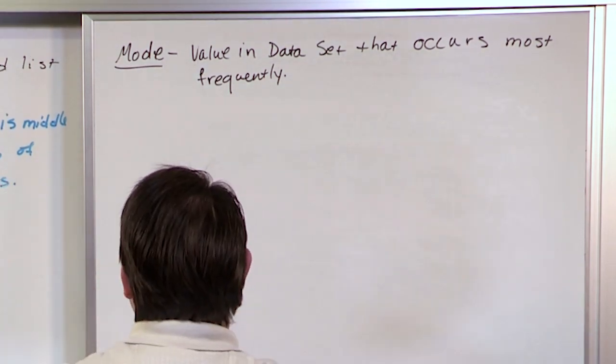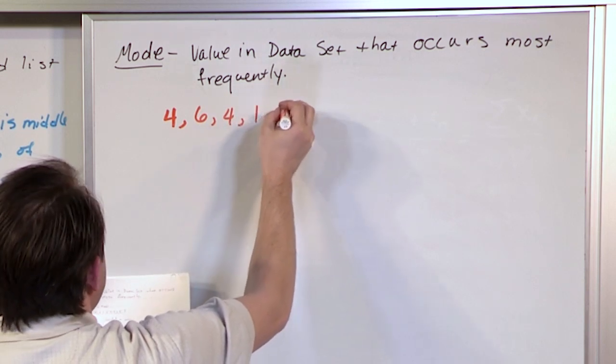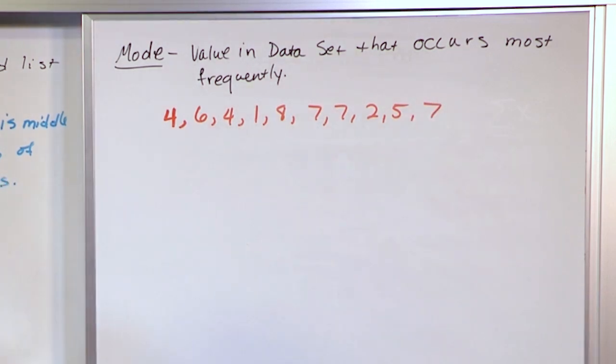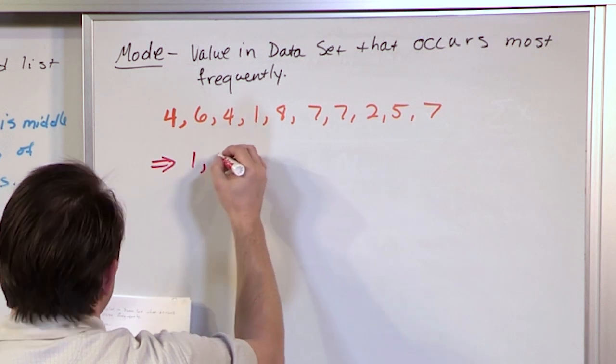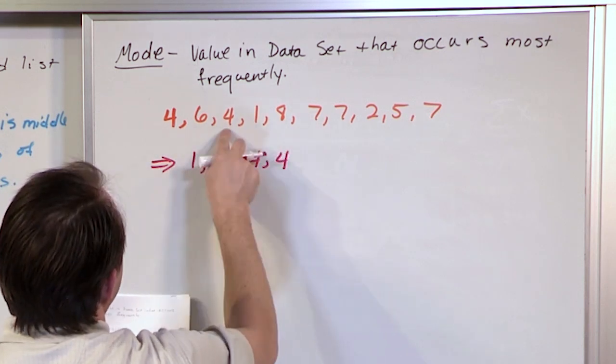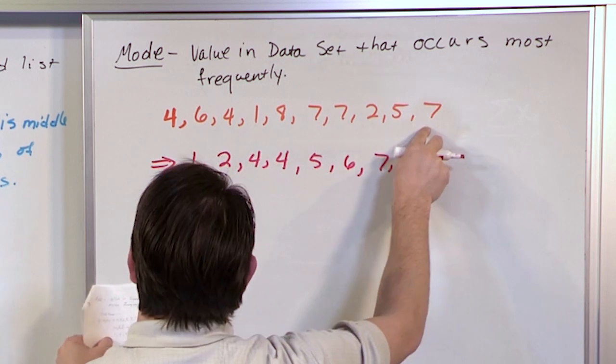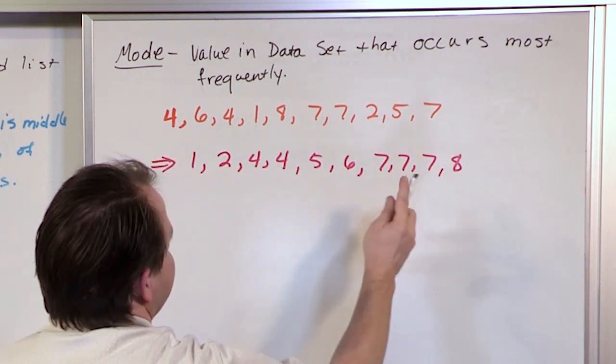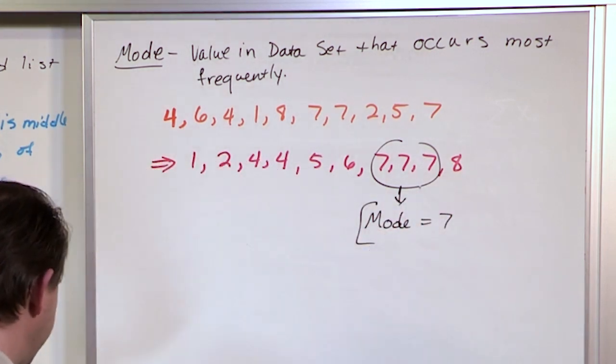So, for instance, if we had the following set of data, if we had 4, 6, 4, 1, 8, 7, 7, 2, 5, 7, and I said find the mode, you can do it without reordering it, but really it's probably just easier if I order in ascending order the data set. So that would be 1, 2, 4, 4, because I have two fours here, 5, 6, 7, 7, 7, because I have three sevens there, and then an 8. And so then all you have to do is scan down the line and realize that this is the value that occurs the most frequently. So the mode is just the number 7, and that's how you find that.